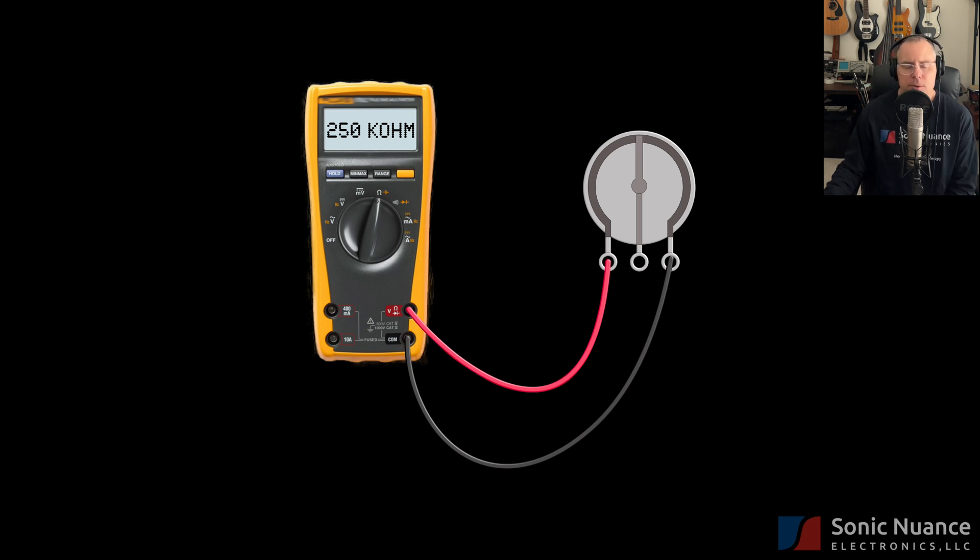Now, you can measure the resistance between any two points on this potentiometer. You can go from this outer terminal to the wiper terminal. And in this case, the shaft is set in the middle. So you will have approximately 125k ohms between these two terminals. And you will also have 125k ohms between these two.